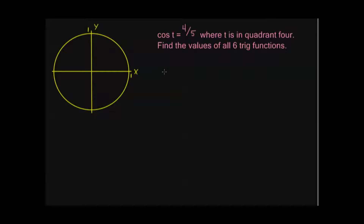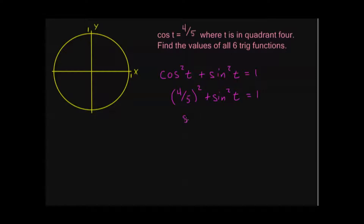My first Pythagorean identity says cosine squared of t plus sine squared of t is equal to 1. In this case, I know what cosine is, so I can plug in 4 fifths for cosine, and I get 4 fifths squared plus sine squared of t is equal to 1. That means sine squared of t is equal to 1 minus 4 fifths squared. Now, 4 fifths squared is 16 over 25, and 1 minus 16 twenty-fifths equals 9 twenty-fifths.